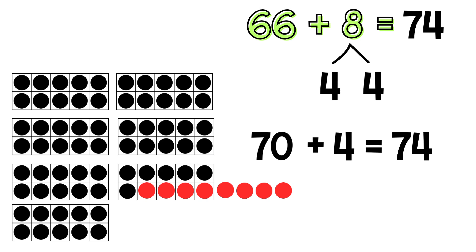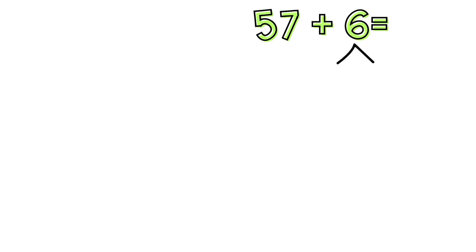Now let's do some together. Get your paper and pencil or wipe off board. Write the equation 57 plus 6 and make a number bond under the 6 like I did. You can pause while you write and press play when you're done. Press pause now.